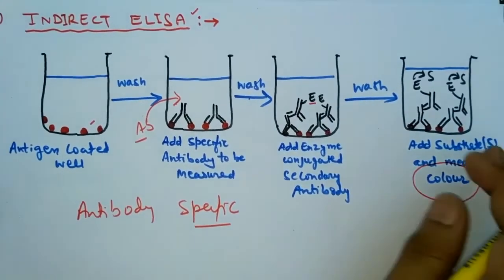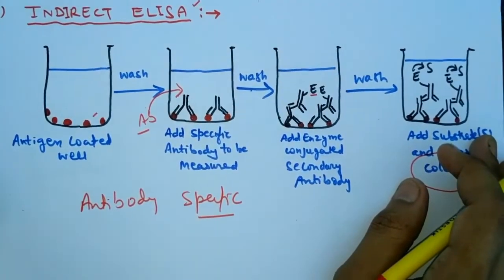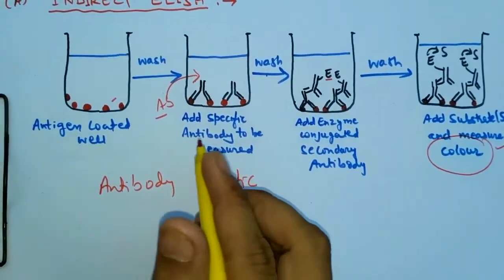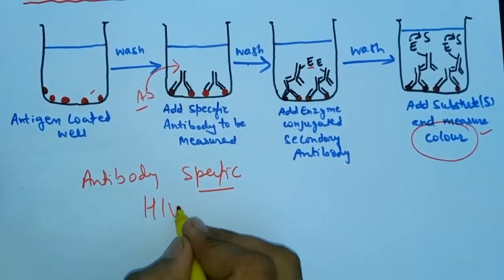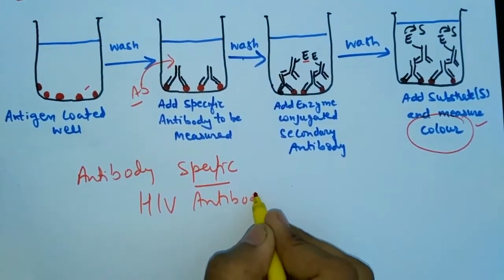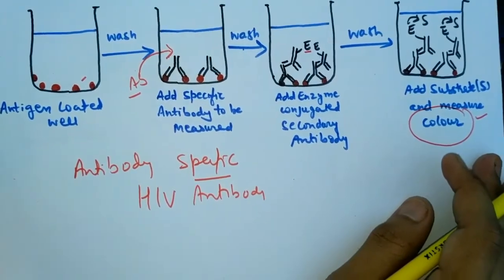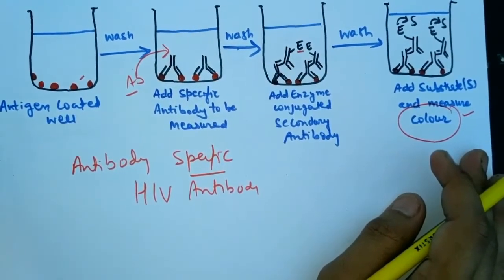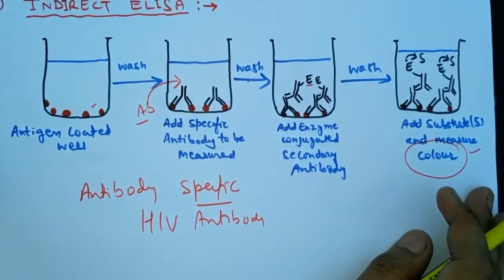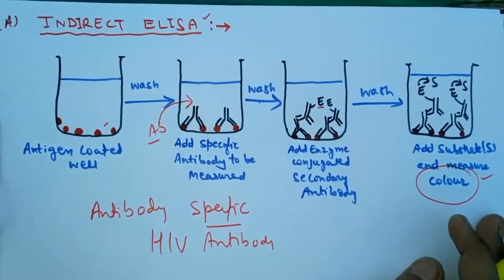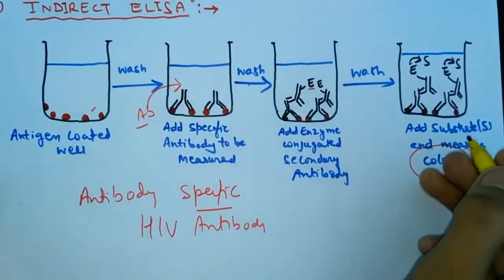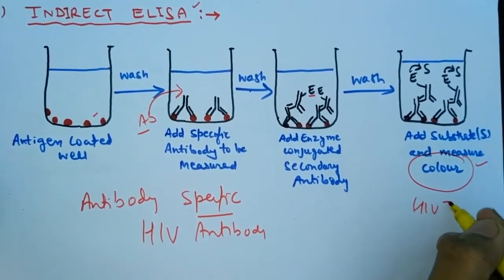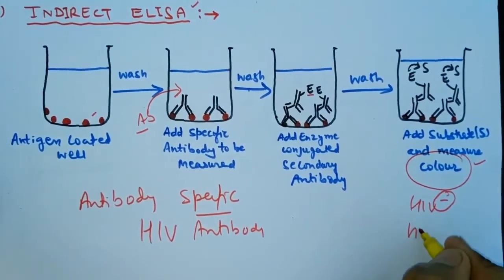If no color is produced, there will be no antibody in the serum, and we can detect the presence or absence of the infection with this color-producing mechanism. This is very helpful in the detection of HIV antibody in HIV infection. If there is no color produced, the HIV test will be negative, and if color occurs, the test will be positive.